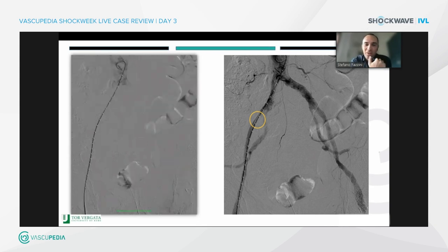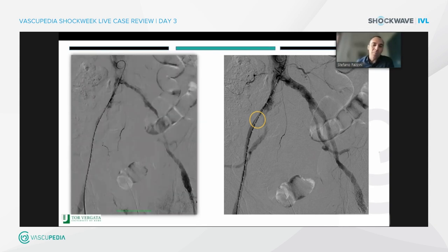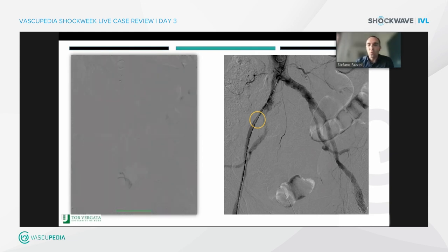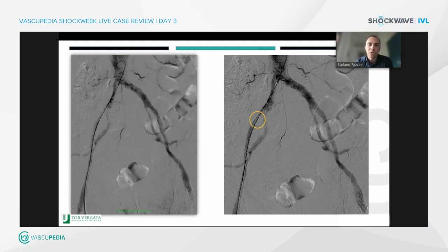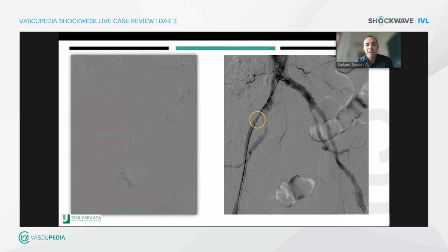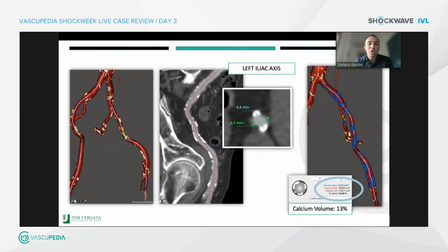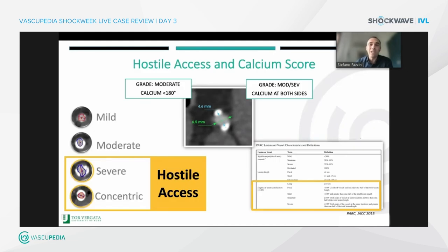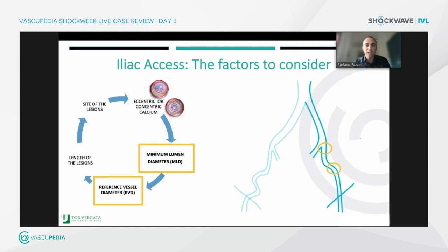If we look at the calibrated catheter, the right external was less than four millimeters, and the left external was not so big either. We agreed and chose the left one. There is a sort of vessel analysis here — not a clear recommendation — but we can observe the volume of calcium. We have 4.6 mm minimal lumen diameter, but no clear recommendation for iliac axis. We can consider it as moderate, because it is less than 180 degrees, but also moderate looking at other classifications, because we have calcium on both sides of the artery. So it is a problem for compliance.